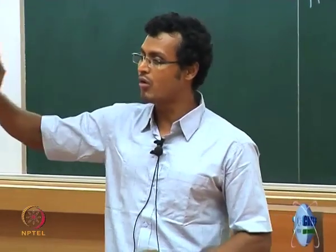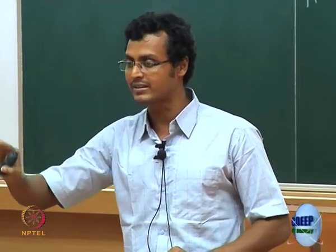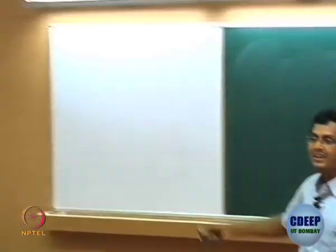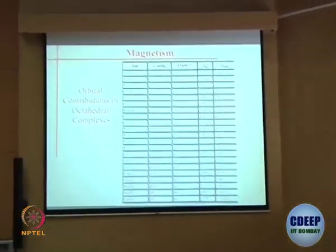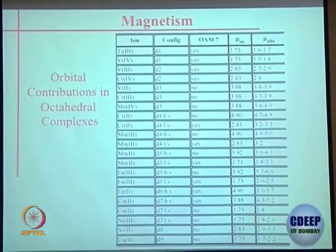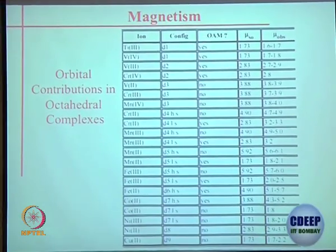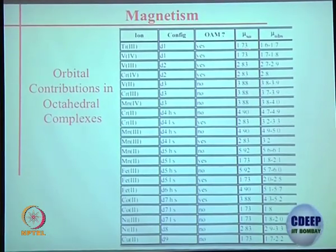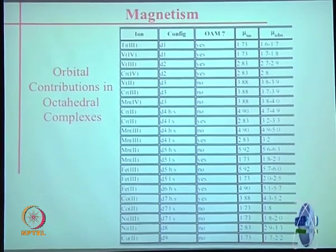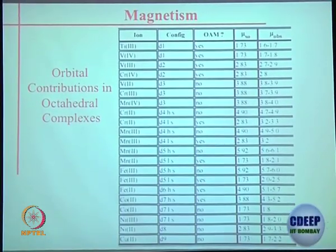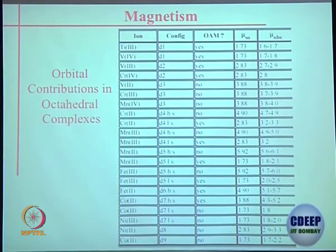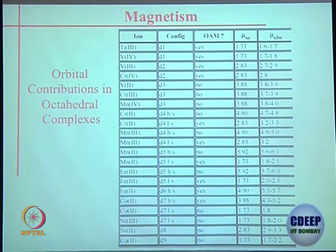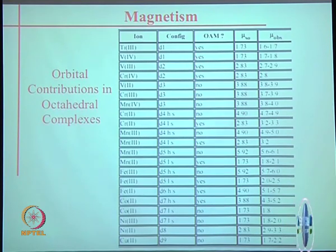Once you know the electronic configurations, you have to ask whether there is going to be any orbital angular momentum or not. Those questions you can verify using this table. You should be able to justify the data yourself — this is like a self-check on whether you have understood orbital angular momentum and t2g/eg electronic configurations.